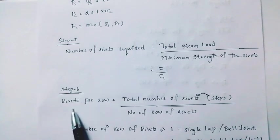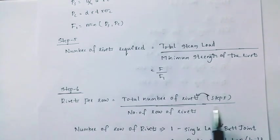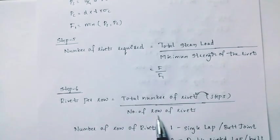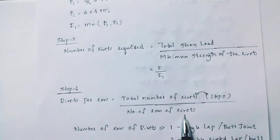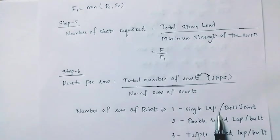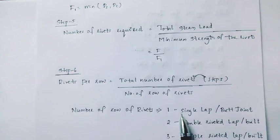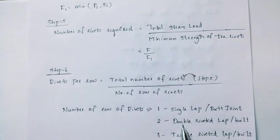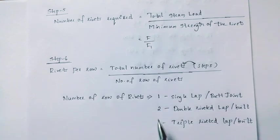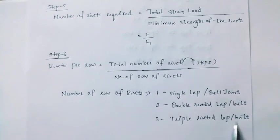Step 6. Rivets per row, that is total number of rivets from step 5 divided by number of rows of rivets. The number of rows of rivets is 1 for single riveted, double riveted lap or butt joint is 2, triple riveted lap or butt joint is 3 rows of rivets.